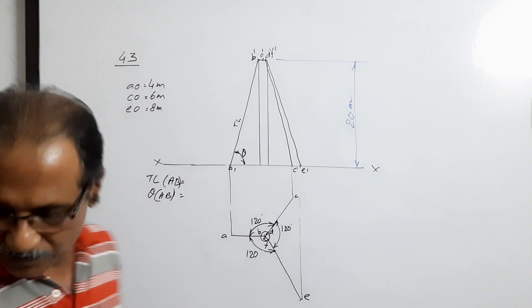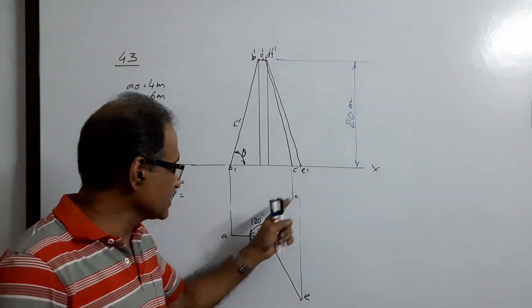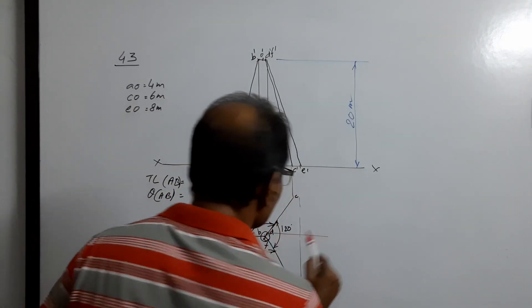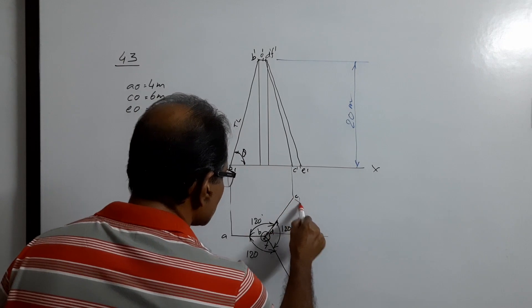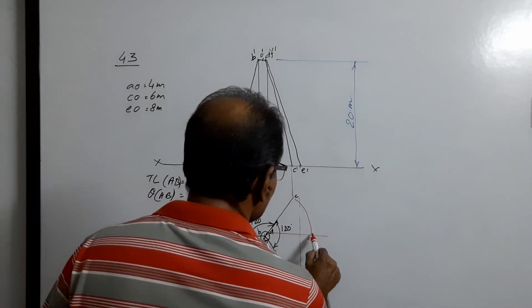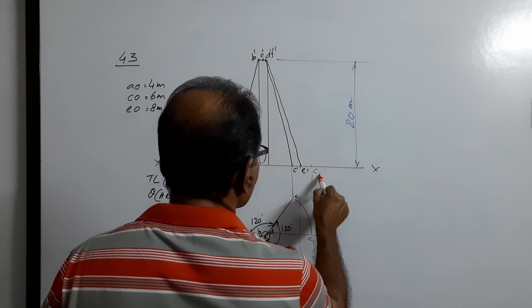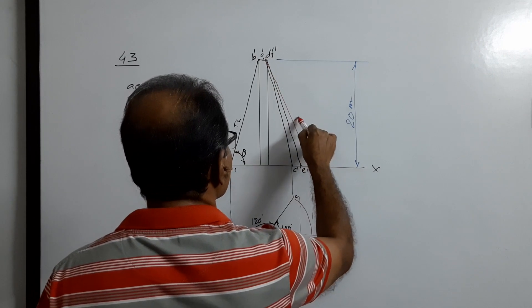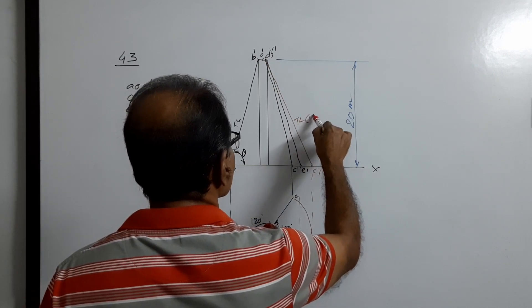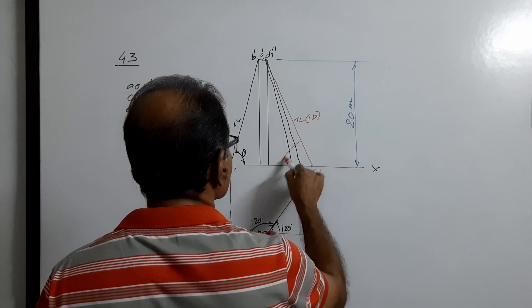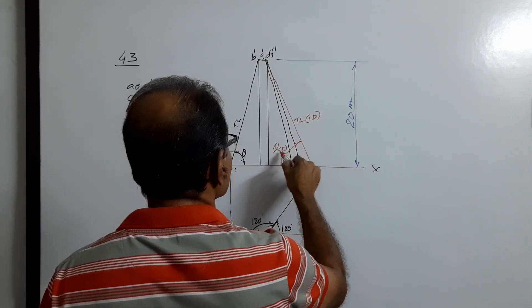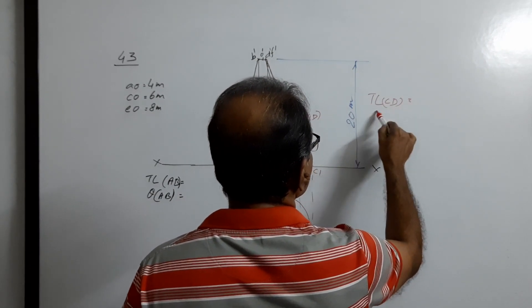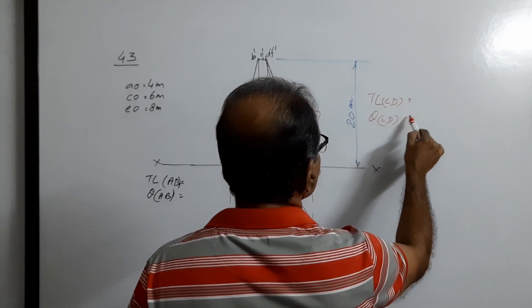What about wire CD? Draw a horizontal line through D. With D as center and DC as radius, draw an arc to get C1, then project C1 up to get C1-dash, and connect it to D-dash. This gives the true length of CD and the angle theta of CD. True length of CD equals so-and-so, theta of CD equals so-and-so — answers obtained.